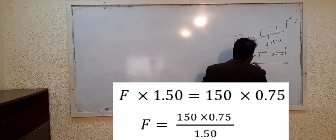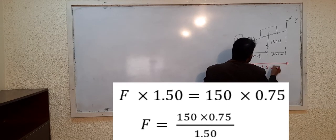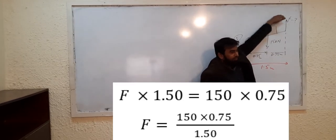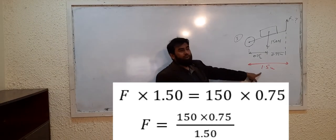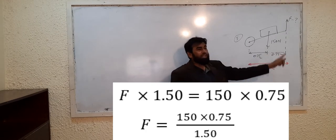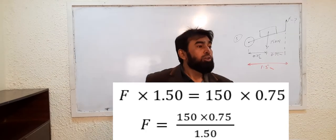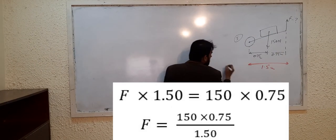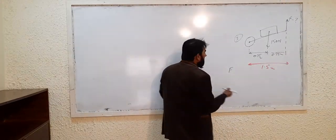Now here we have to find out F. F is the force which is applied vertically upward; its distance from the pivot is 1.5 meter. Because you have to take the distance from the pivot, the total distance of the force is 1.5. Force multiplied by 1.5 is equal to...